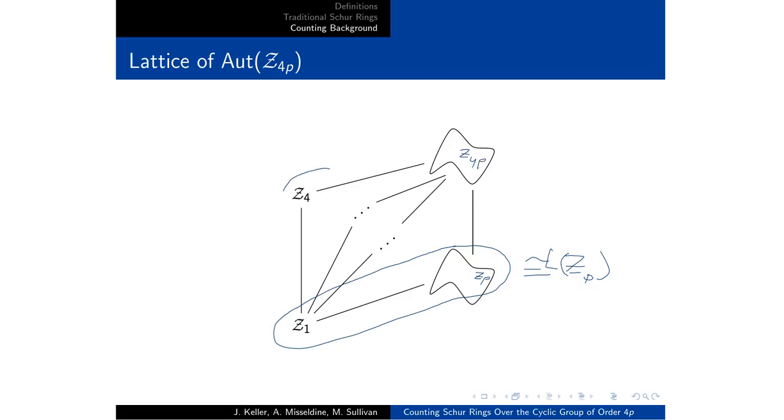And again, this top stretch right here will be also isomorphic to the lattice of ZP.